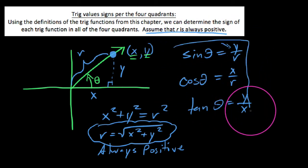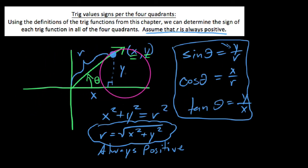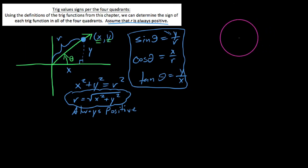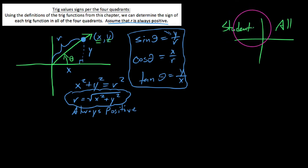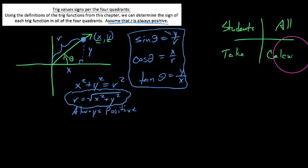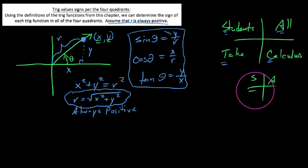Our goal here is to come up with a really nifty way to determine what quadrant an angle terminates in and how that affects the sign of our trig values. Here's the mnemonic: 'All Students Take Calculus.' We sketch it out with the capital letters A, S, T, C placed in quadrants I through IV respectively.